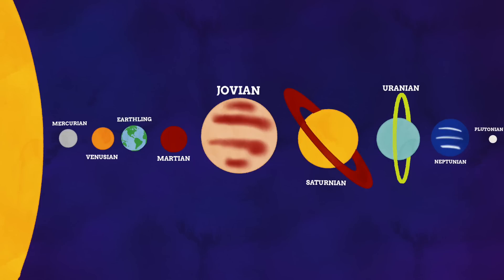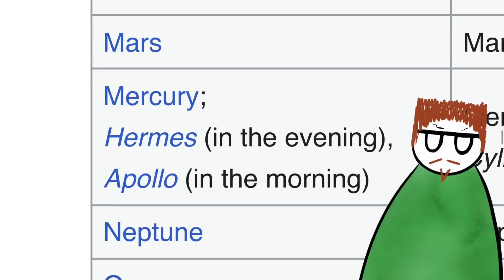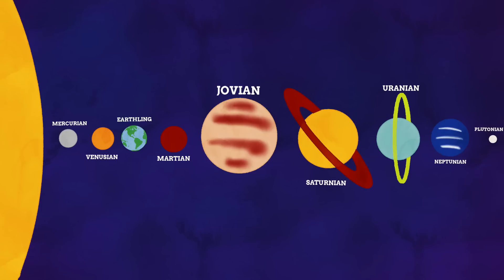The planet Mercury also has another demonym in this same style: Hermean. This demonym comes from the god Hermes, the Greek equivalent of the Roman god Mercury, who this planet is named after. Wikipedia also tells me that the planet Mercury itself should actually be called Apollo in the morning and Hermes in the evening, which is a little odd, as Apollo and Mercury slash Hermes aren't the same god. But why on Earth — or why on Mars, Saturn, or Neptune — do these demonyms even exist?